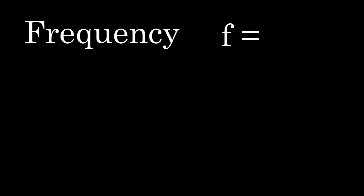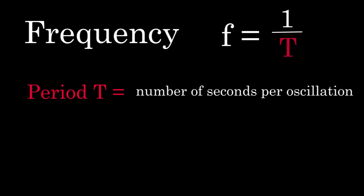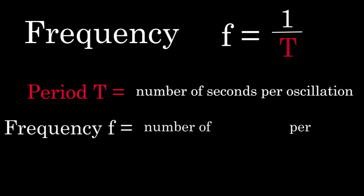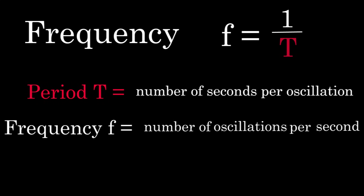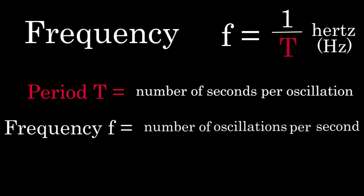Frequency is defined to be one over the period. So since the period is the number of seconds per oscillation, the frequency is the number of oscillations per second. Frequency has units of one over seconds, and we call one over a second a hertz.